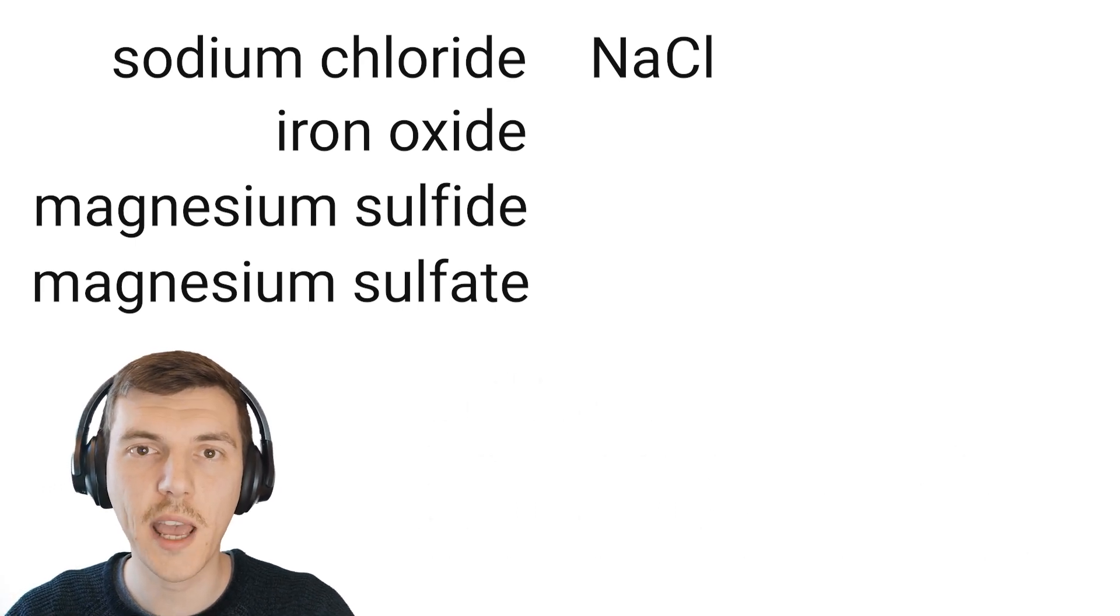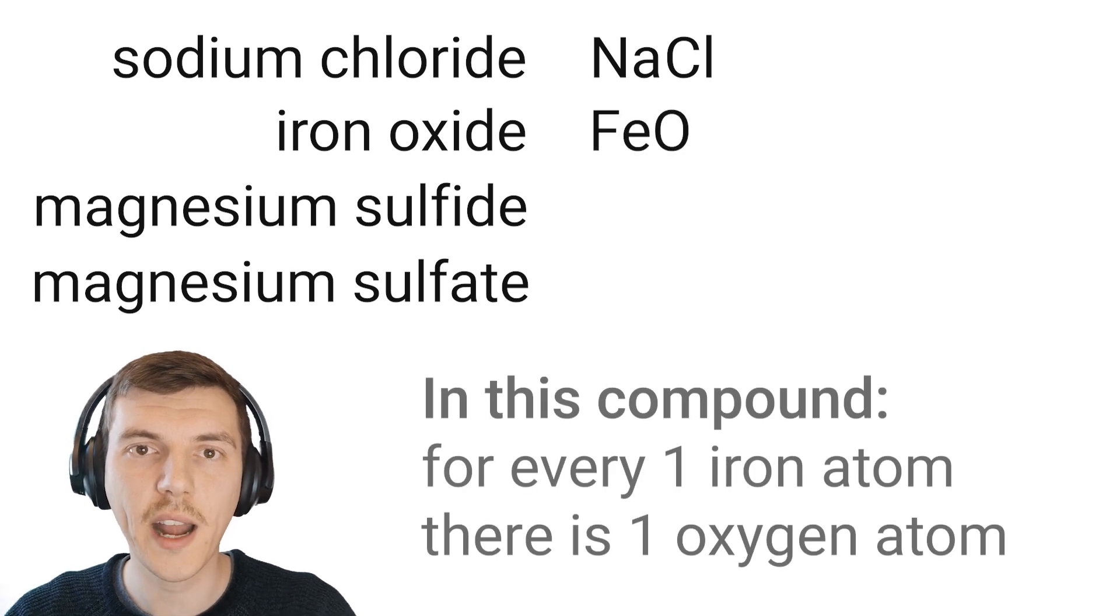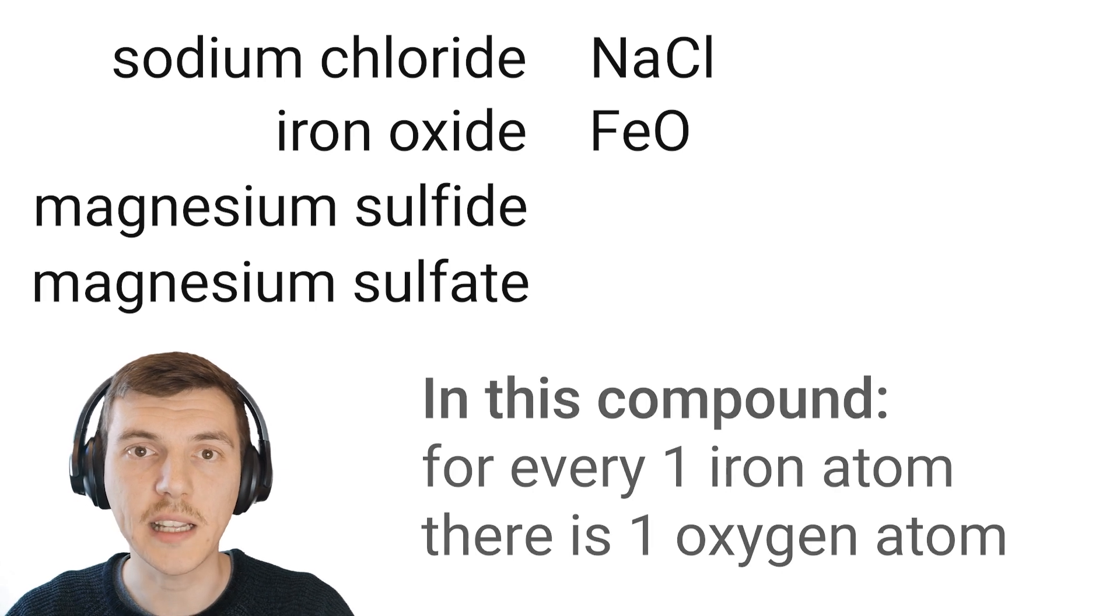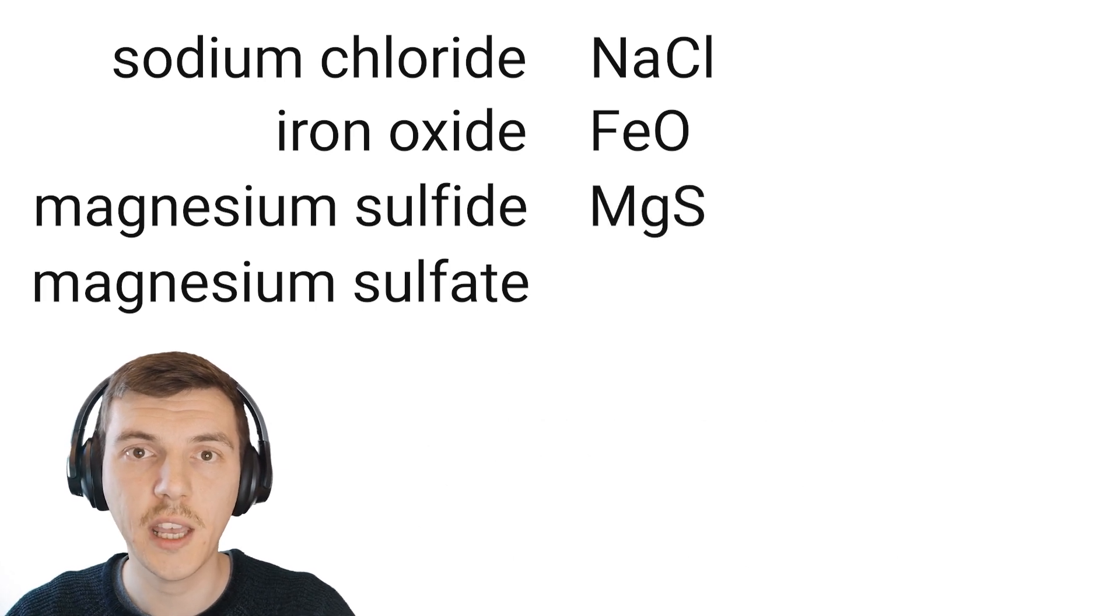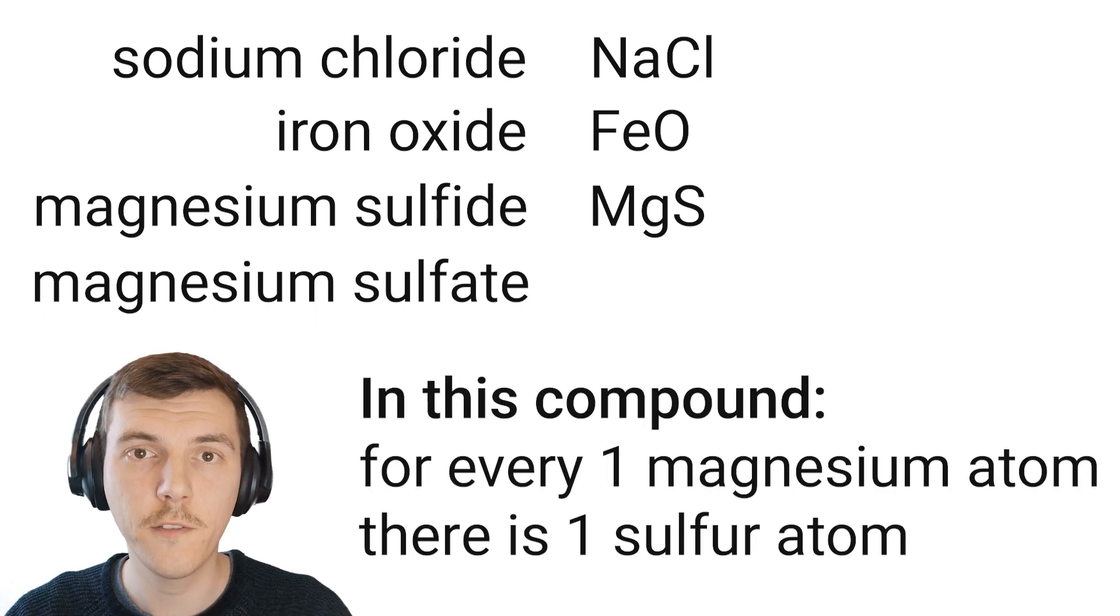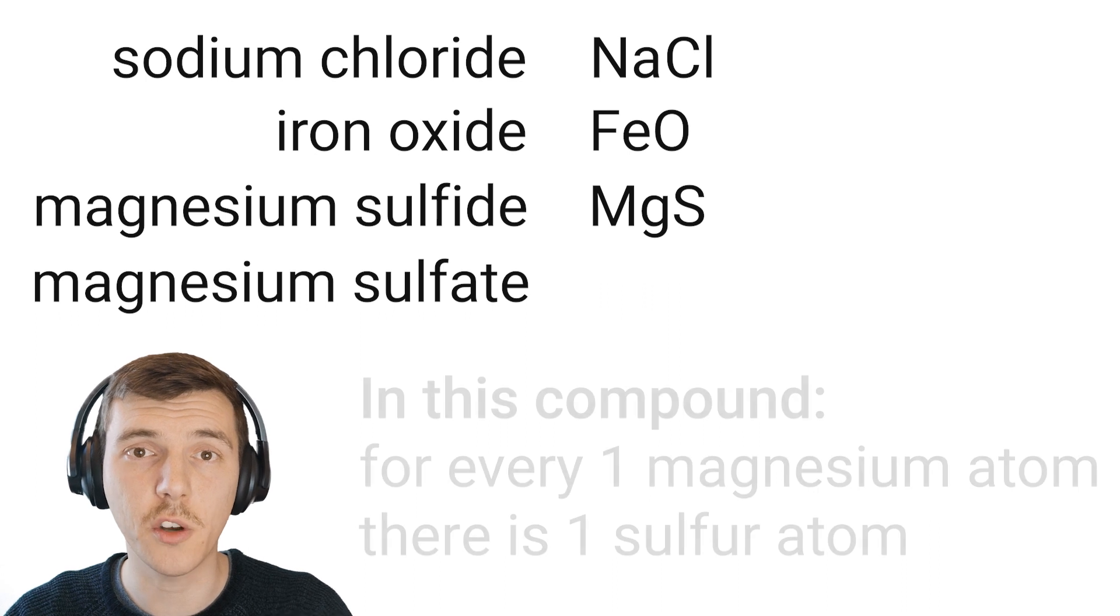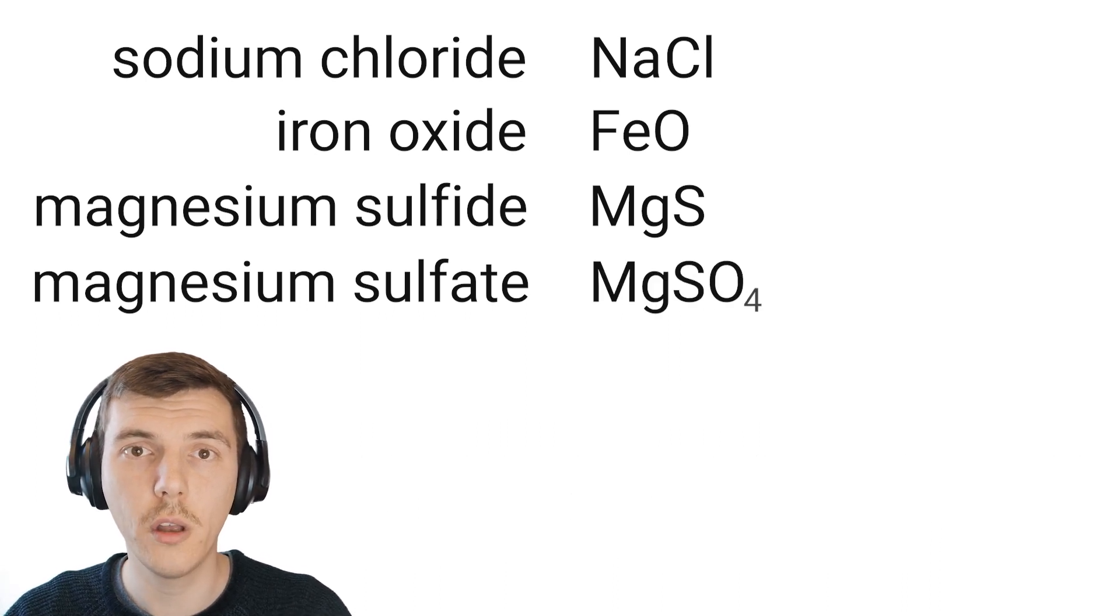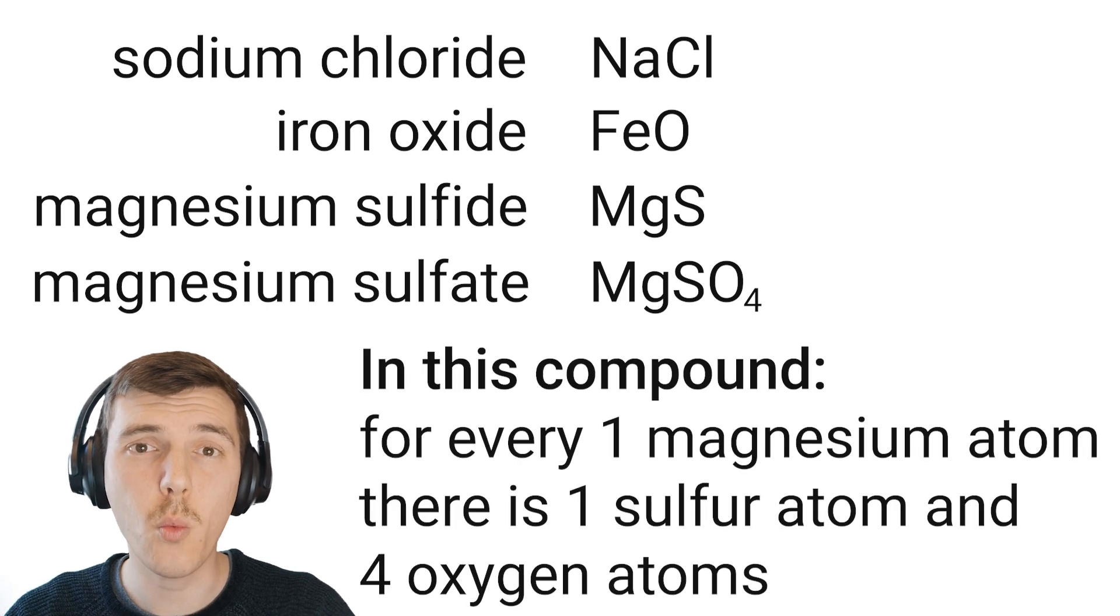Iron oxide's up next: Fe, O. For every one atom of iron, we have one atom of oxygen. Next, we'll look at magnesium sulfide: Mg, S. What that means is for every one magnesium atom, we have one sulfur atom. Finally, let's look at magnesium sulfate: Mg, S, O, 4. This means that for every one magnesium atom, we need one sulfur atom and four oxygen atoms.